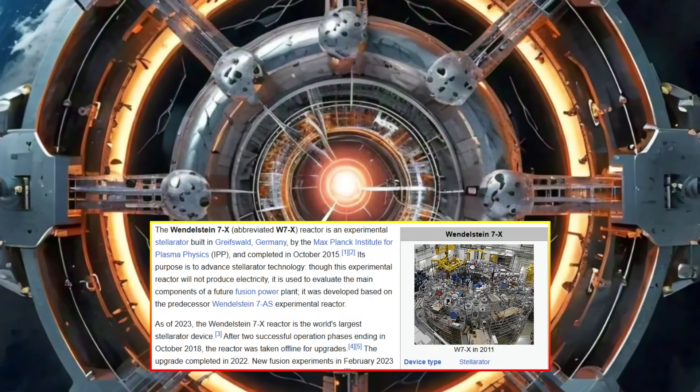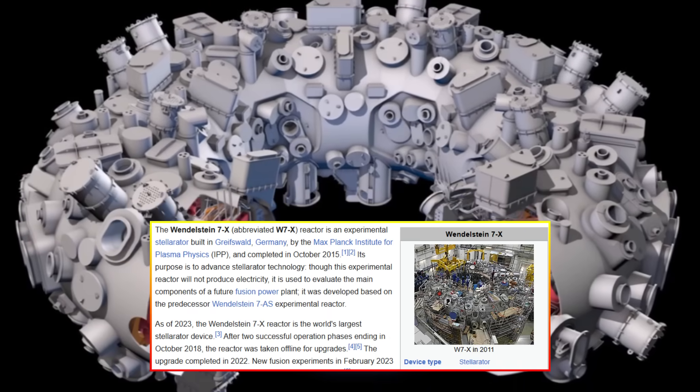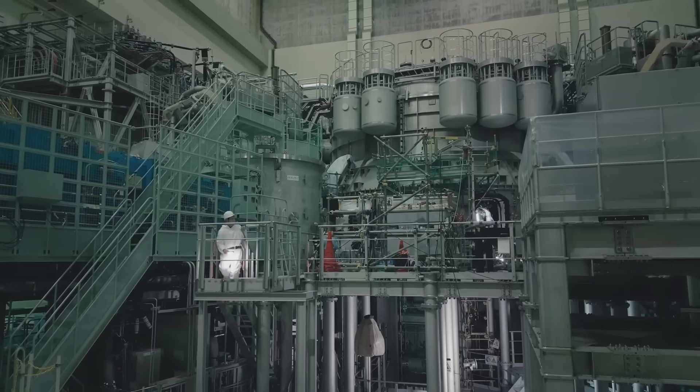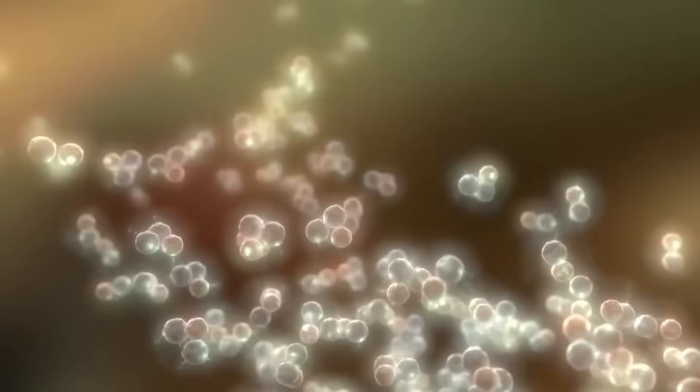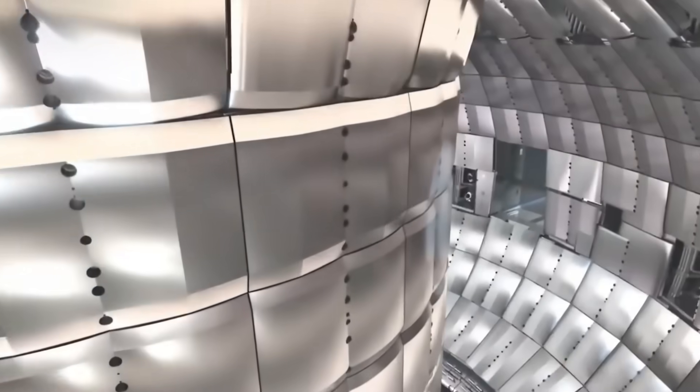When the Wendelstein 7X Stellarator in Germany achieved record plasma parameters in 2023, researchers celebrated. But what happened at JT-60SA made them hit the emergency shutdown. The question isn't just what they saw, but why it terrified them enough to kill the experiment instantly.